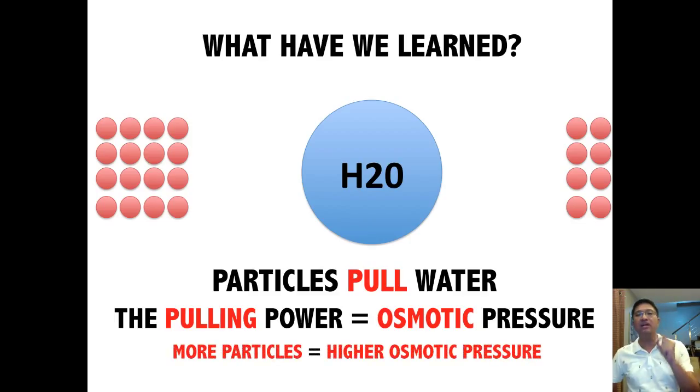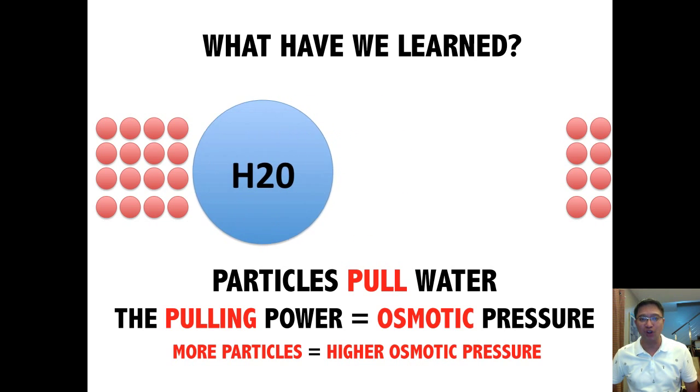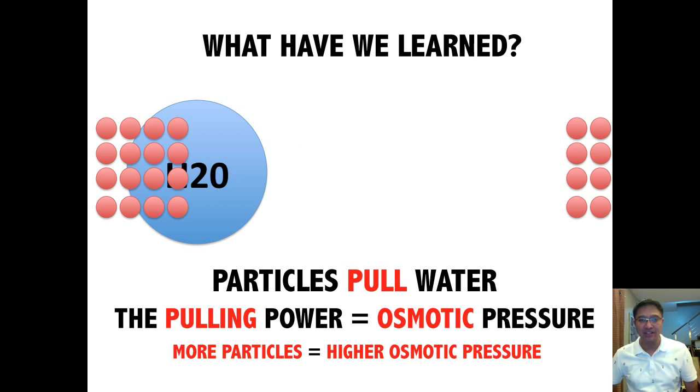Hence, the more particles, the higher the osmotic pressure, we all know where will water go. It goes to the side where there are greater number of particles. So water goes to the greater number of particles.